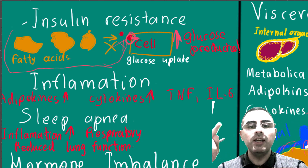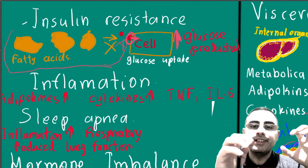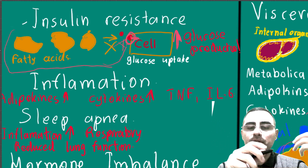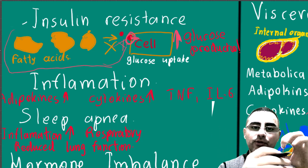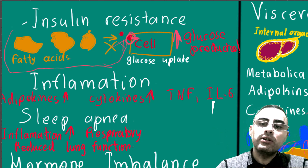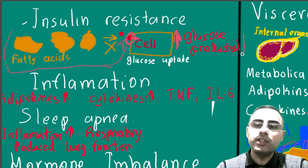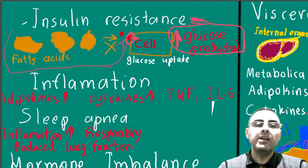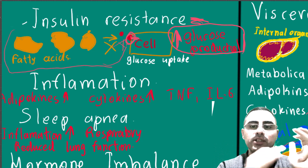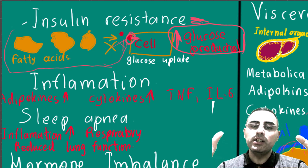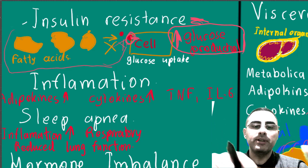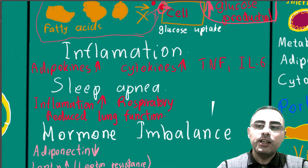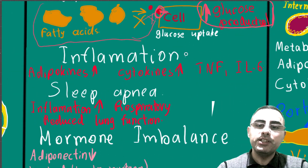Increased glucose causes chronic damage to cells, especially nerve cells and the endothelium of blood vessels. Increased glucose production by the liver is another negative health effect that contributes to insulin resistance. So there are two key factors: fatty acid production and increased glucose production by the liver.